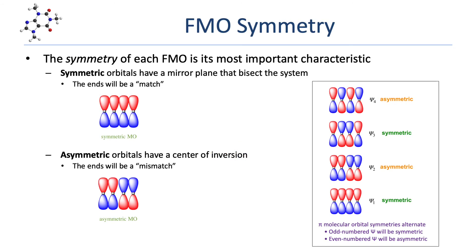Fortunately, we don't need to know exactly what the FMOs look like — we only need to know each orbital's symmetry. A symmetric orbital has a mirror plane that bisects the pi system. Here we see an example of a symmetric molecular orbital where the left half exactly mirrors the right half. Symmetric molecular orbitals will have ends that match with respect to phase — in this case, the blue lobes on the outer edges are both pointing down. An asymmetric molecular orbital has a center of inversion. With respect to phase, the left half is the exact opposite of the right half. Asymmetric molecular orbitals will have ends that are a mismatch with respect to phase — the blue lobes on the outer edges are pointing in opposite directions, one up and one down.